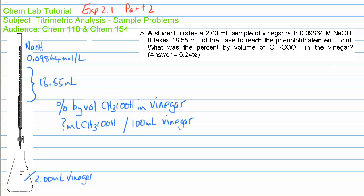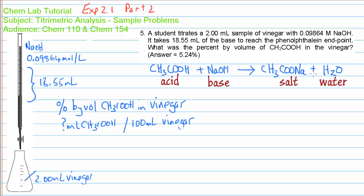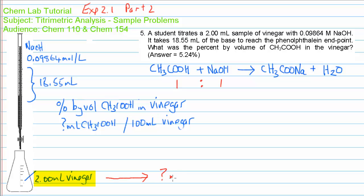Let's have a look at the chemical equation. Here is the balanced equation for the reaction between acetic acid and sodium hydroxide — the acid and the base — yielding the salt, sodium acetate, and water. The stoichiometry is one to one, so for every one mole of acetic acid, we need one mole of sodium hydroxide to completely neutralize it. The question asks: in this 2 mL sample of vinegar, how many millilitres of acetic acid are there?